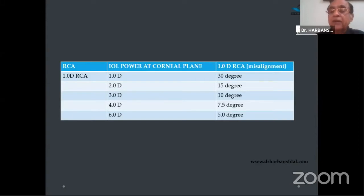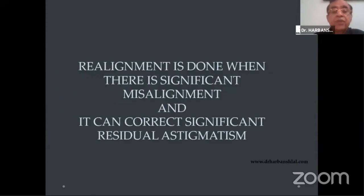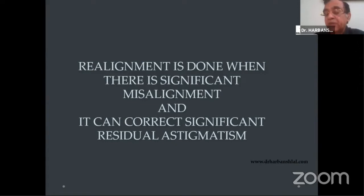We actually do not correct the refractive error — we correct the misalignment. Realignment is done when there is significant misalignment that can correct significant residual astigmatism. We are trying to correct the misalignment, not the residual refractive error. That is important to understand.